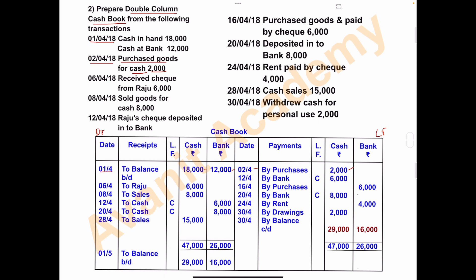On 6th April, a check was received from Raju for rupees 6,000. This is a receipt, so we record it on the debit side. Write 6th April, 'to Raju', and since a check is received, record the amount of 6,000 in the cash column.